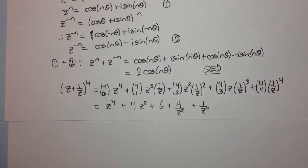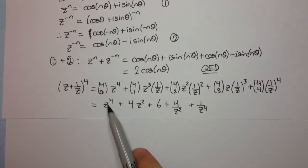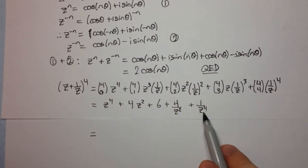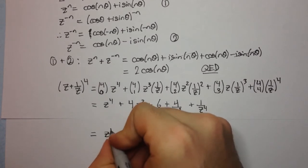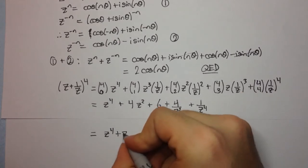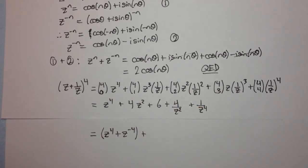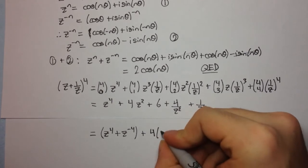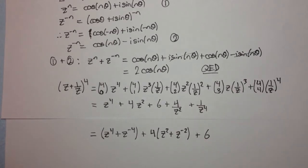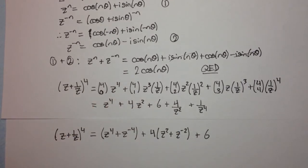Now we collect powers of the same magnitude but opposite sign. We group z^4 with 1/z^4 (i.e., z^(-4)), then factor out 4 from the middle pair to get 4·(z^2 + z^(-2)), plus 6. This equals (z + 1/z)^4.